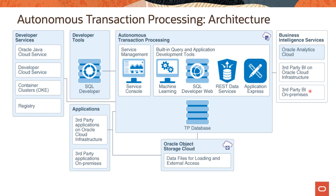Autonomous transaction processing architecture is similar to what we saw for autonomous data warehouse. In addition, autonomous transaction processing also has support for developer services including Oracle Java Cloud Service, Oracle Container Engine for Kubernetes (OKE), and the registry service. This concludes the lesson, thanks for watching.